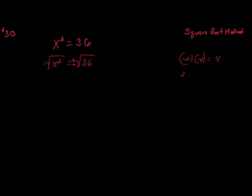When you have a square and find the square root of a value, there's either the principal square root or the negative. The square root and x squared cancel each other, leaving x. The square root of 36 is a perfect square, so our possible solutions are plus or minus 6. You can double check: negative 6 times negative 6 is 36, and 6 times 6 is 36. So the solution set is negative 6 and 6.